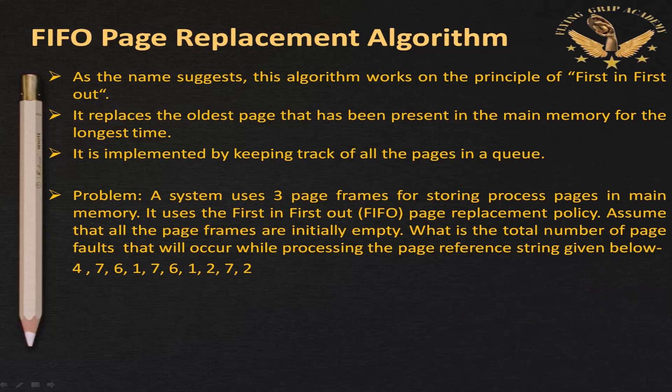The first one is FIFO page replacement algorithm. As the name suggests, this algorithm works on the principle of first in first out. It replaces the oldest page that has been present in main memory for the longest time. You need to remember two key concepts: most frequently used and least frequently used. Whichever page is staying the longest time needs to be replaced. It is implemented by keeping track of all pages in a queue.